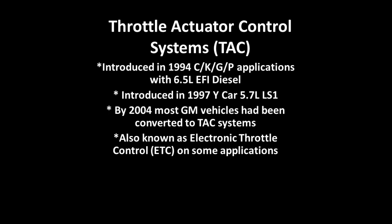The TAC system itself was first introduced on the 1994 GM truck applications with the 6.5 liter EFI diesel motors. This was the first application where we actually had a system that controlled your throttle opening through the use of electronics rather than a throttle cable. These systems do not use throttle cables — they simply use electronics to control the operation of the throttle plates themselves.